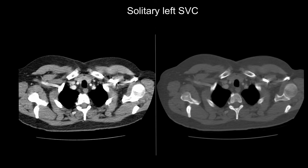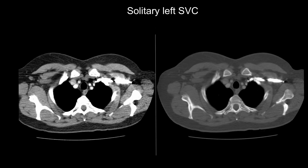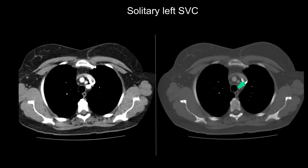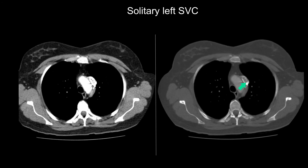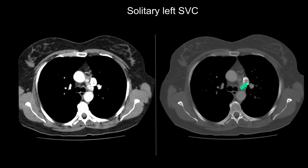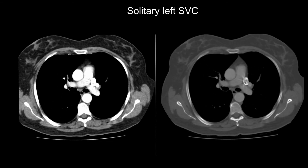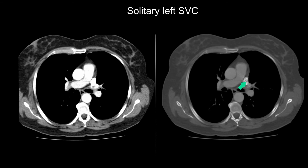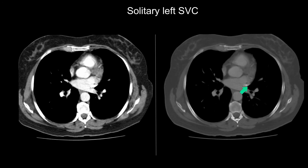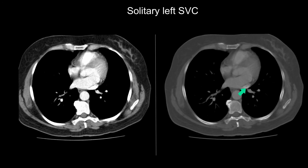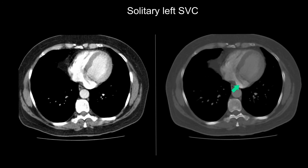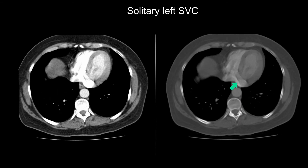Here is a patient with a solitary left SVC. It receives blood from the left brachiocephalic vein. Note that there is no right-sided SVC. As a consequence this solitary left SVC is larger than it would have been had a double SVC been present. Here is the coronary sinus.